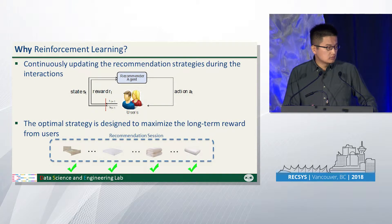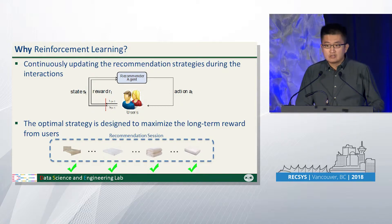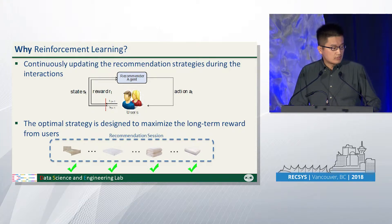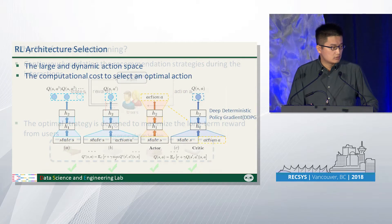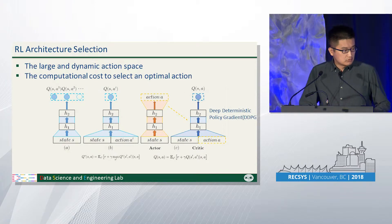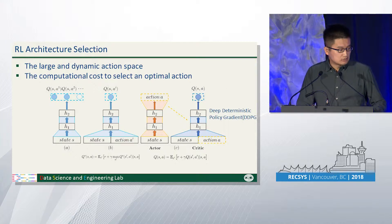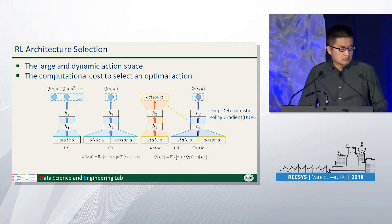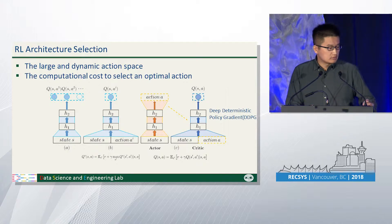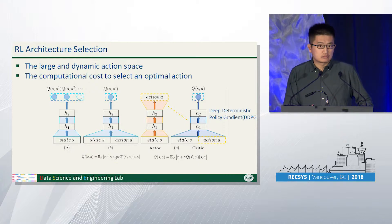Deep reinforcement learning-based recommendations have two advantages. First, they are able to continually update their recommendation strategy during interaction with users. Second, the optimal strategy is designed to maximize the long-term reward from users. When we use reinforcement learning for recommendations, there are two key challenges: the first architecture is hard to handle the large and dynamic action space, and the computational cost to select the optimal action for the second architecture is extremely high.